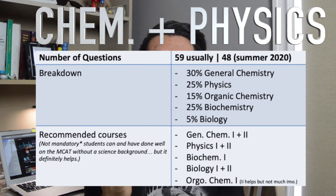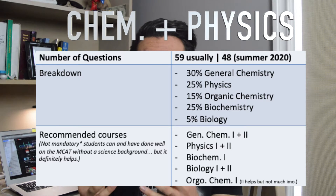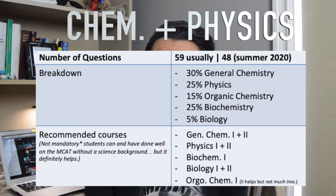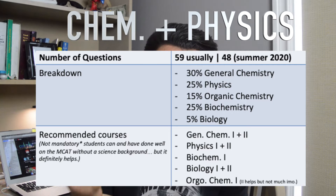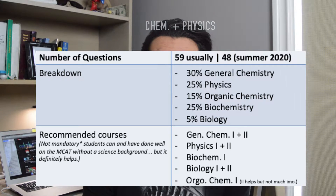The chemical and physical foundations of biological systems is the very first section you'll be writing on the MCAT. Normally it has 59 questions, but if you're writing in the summer of 2020 it's going to have 48 questions. The breakdown is: 30% general chemistry, 25% physics, 15% organic chemistry, 25% biochemistry, and the remaining 5% biology.